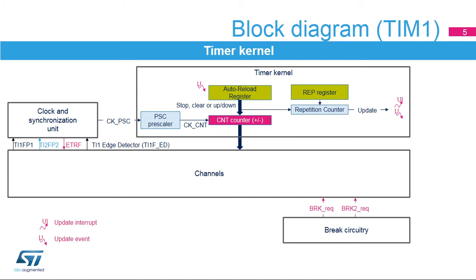This slide presents the block diagram of the TIM1 timer, which has the same architecture as TIM8 and TIM20. The timer kernel consists of a 16-bit up-down counter coupled with an auto-reload register to program the counting period. If the repetition counter is used, the update event is generated after up-counting is repeated for the number of times programmed in the repetition counter register; otherwise, the update event is generated at each counter overflow. A preload register is implemented to update configuration registers, with its content transferred into the shadow register permanently or at each update event.